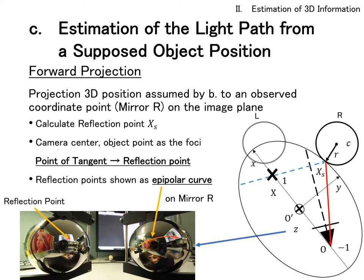To do this, we assume the ellipse with the camera position and the object position as its two foci. We also assume that the point of tangency with the sphere in the solution plane. In this case, each reflection point draws an epipolar curve in the image plane.